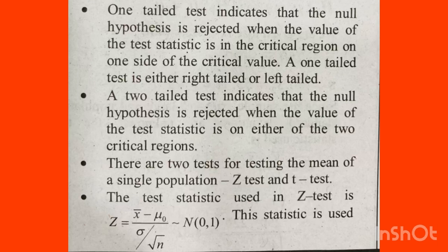A two-tailed test remains symmetrical. A two-tailed test indicates that the null hypothesis is rejected when the value of the test statistic falls in either of the two critical regions. We have two tests for testing the mean of a single population: z-test and t-test.